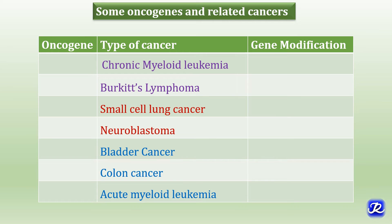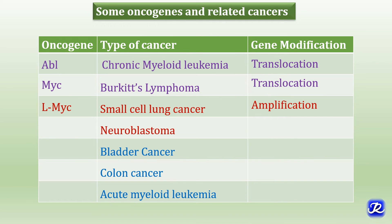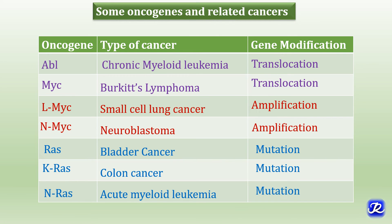This table shows oncogenes, type of cancer, and gene modification. In chronic myeloid leukemia, the ABL oncogene is involved via translocation. In Burkitt's lymphoma, MYC oncogene is involved via translocation. In small cell lung cancer, MYC oncogene occurs by gene amplification. In neuroblastoma, N-MYC oncogene occurs by gene amplification. In bladder cancer, colon cancer, and acute myeloid leukemia, the RAS oncogene is involved via mutation.